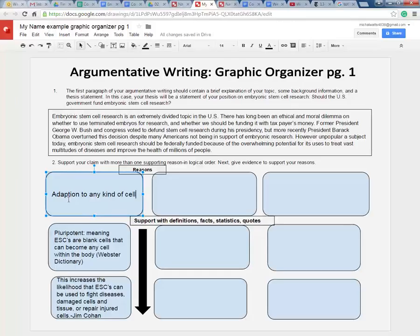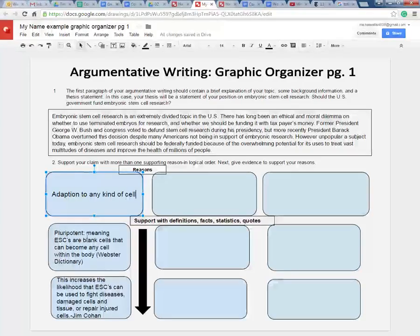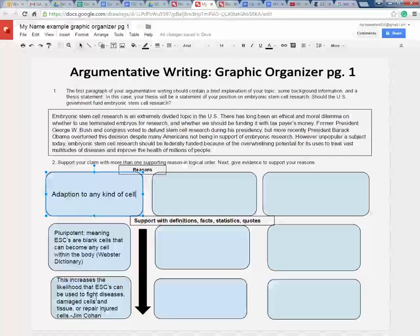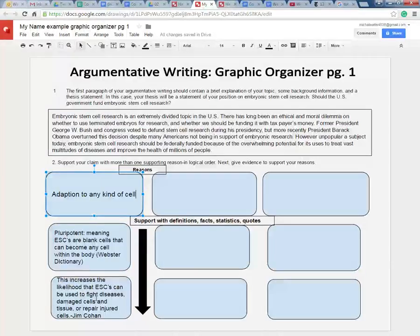She says they can adapt to any kind of cell. Then she defines the term pluripotent that she found in one of her essays. She uses the Webster Dictionary to define this. Then she further talks about why being pluripotent is important and what it can do.